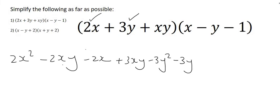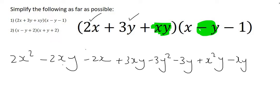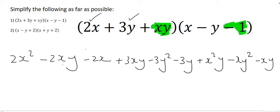The next step would be to use this xy. We'll start by multiplying it with the x, so that's going to give us x squared y. We'll then multiply the xy and the minus y which is going to give us minus xy squared. And then lastly we'll multiply it with the minus 1 at the end which is just going to give us negative xy.